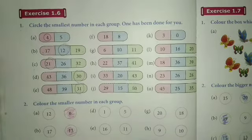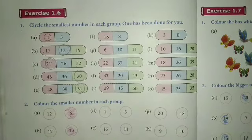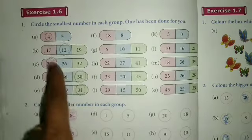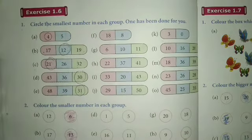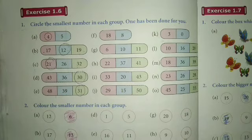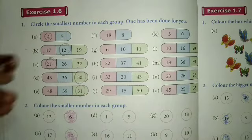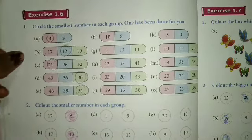Next is exercise 1.6. Circle the smallest number in each group. 1 has been done for you. Ok? यहाँ पर 4 लिखा हुआ है, यहाँ पर 5 लिखा हुआ है. अब 4 और 5 में small number कौन सा है? Smallest number कौन सा है? Yes, 4 is smallest number. इसलिए यहाँ पर circle बना हुआ है.